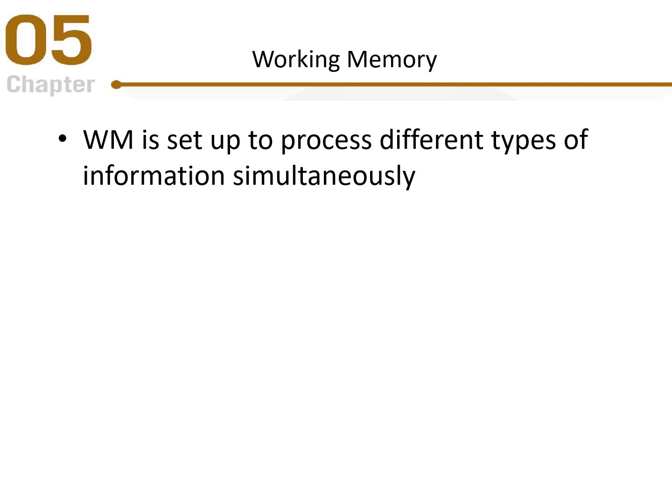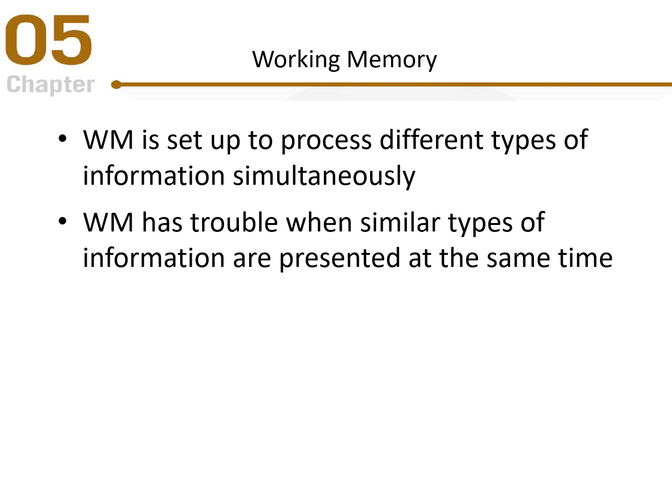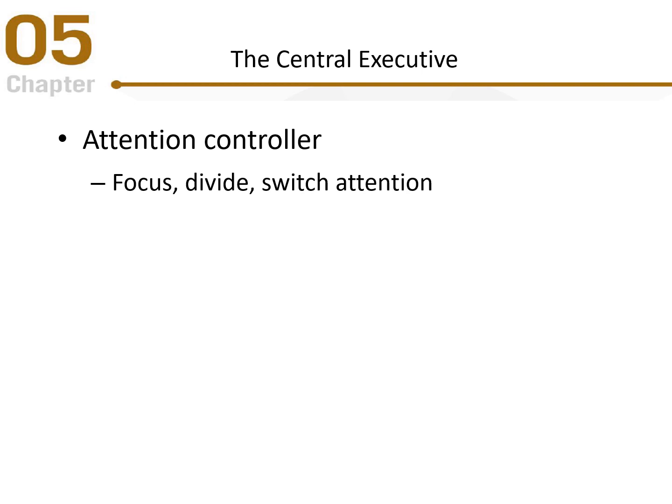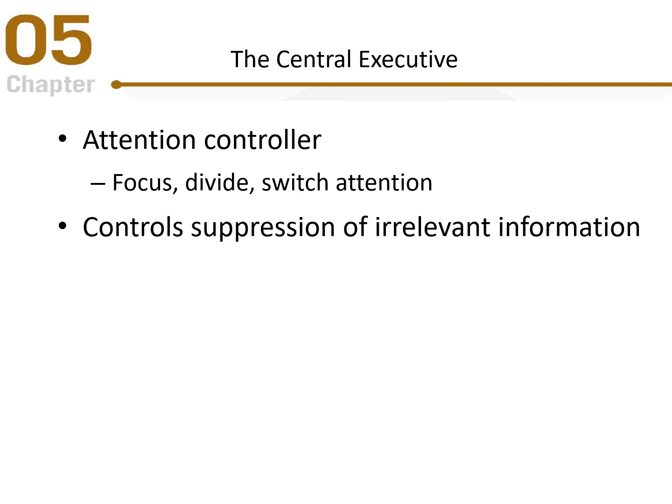Working memory can process different types of information simultaneously — both visual and auditory, for example — but has trouble when similar types of information are presented at the same time. The central executive acts as the attention controller, focusing attention, dividing attention, and switching attention between items. It also controls suppression of irrelevant information when there is a lot of incoming input.